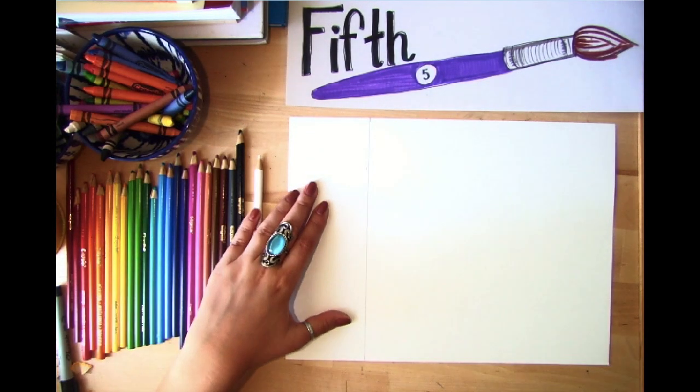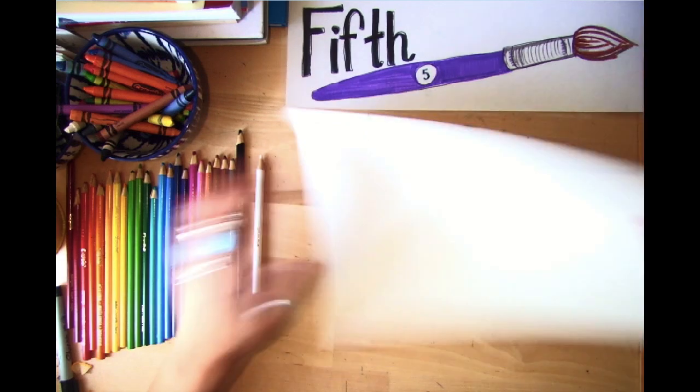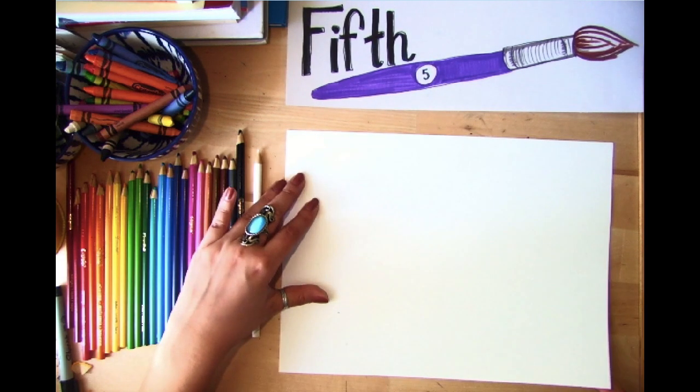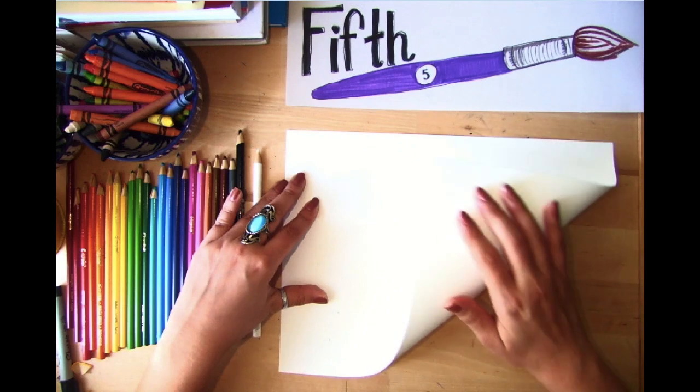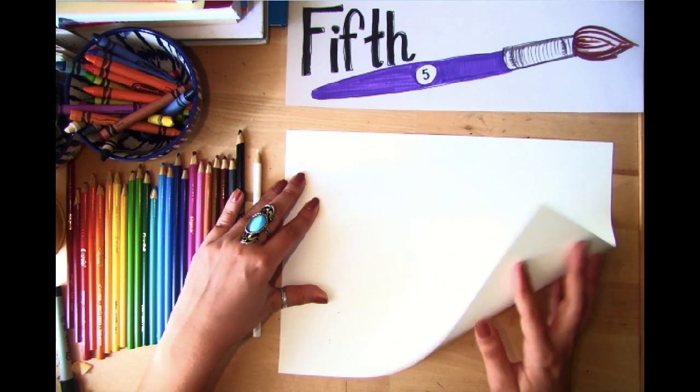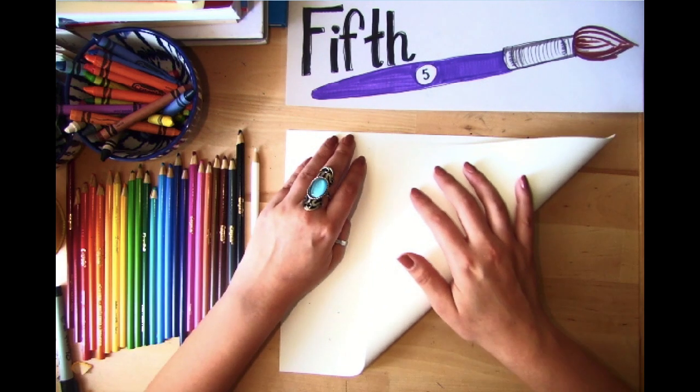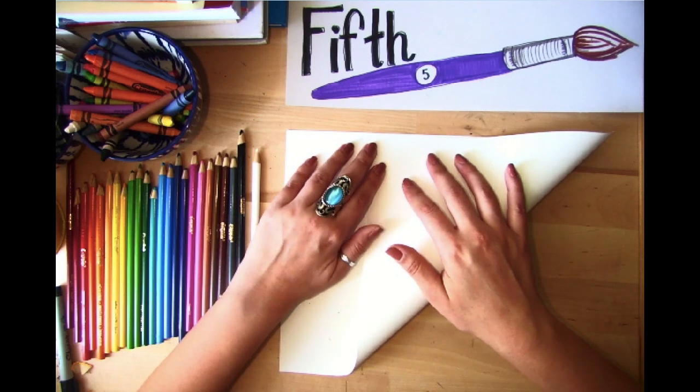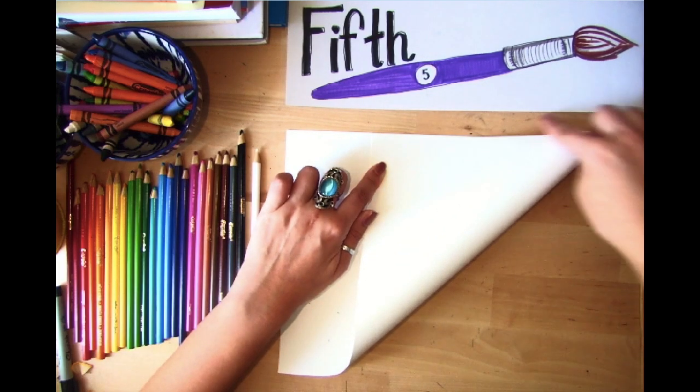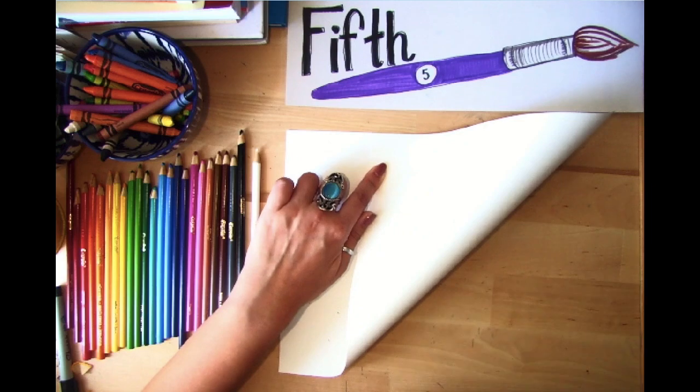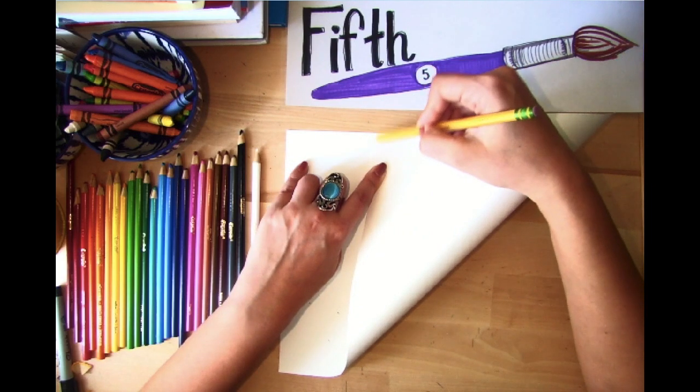If you don't have a ruler, what you can do instead is take the corner of your paper, fold it, but don't fold it hard so there's a crease. Just gently take it over until you meet the edge of your paper. Then what you want to do is take your pencil and draw a line.